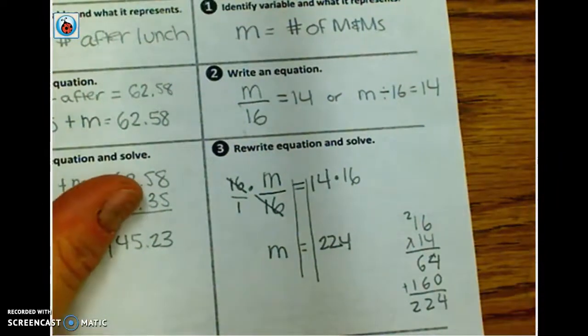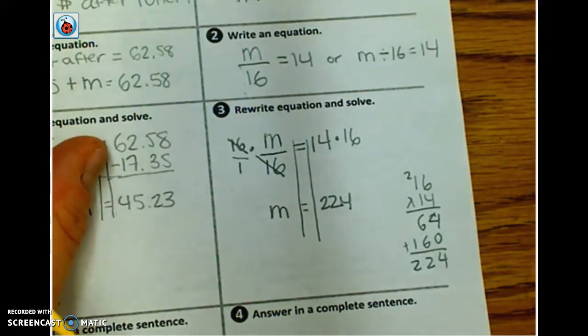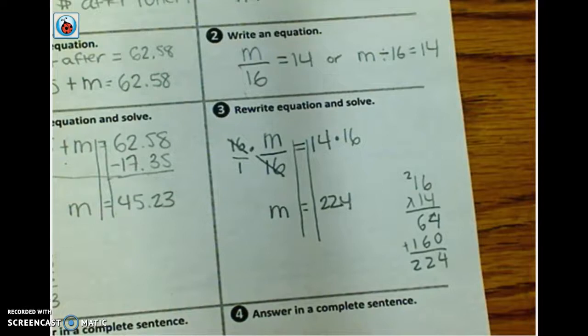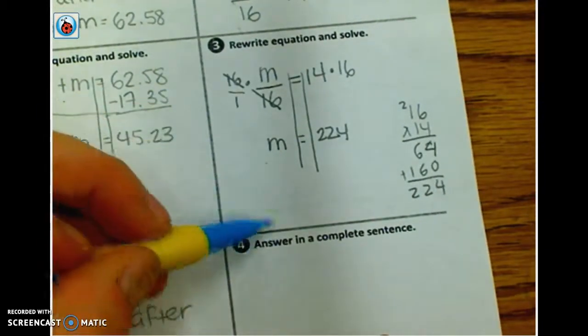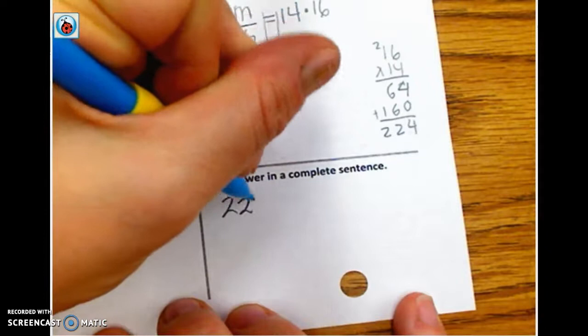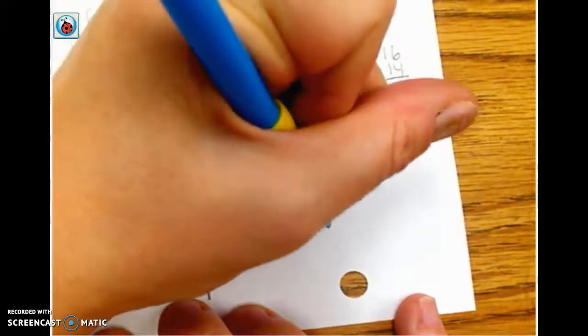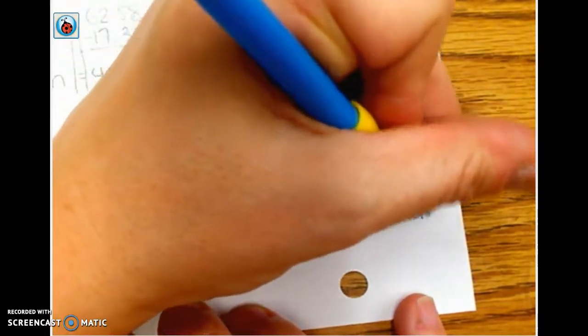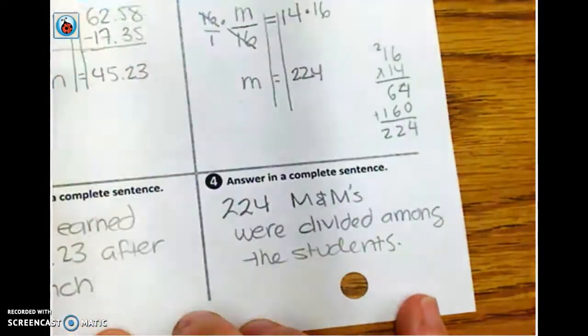And that seems to make sense. I mean if I only got like 20 M&Ms or something like that, it doesn't make sense that 20 divided by 16 is 14. And the same thing is true too. If I got 2,000, that would make sense as well. If I only got 14 M&Ms, I feel a little gypped there. So what does this mean? Answer the question, how many M&Ms were being divided? 224 M&Ms were divided among the students. Alright. Let's go ahead and take a look at the back.